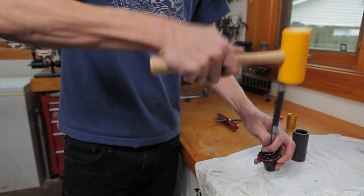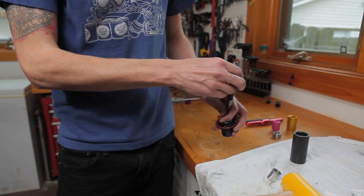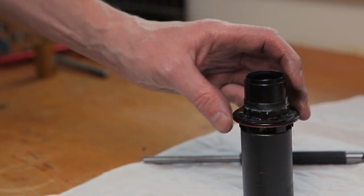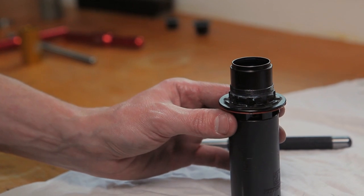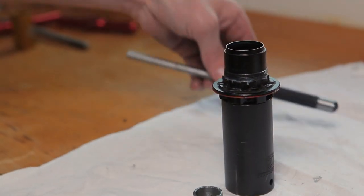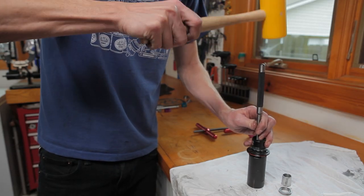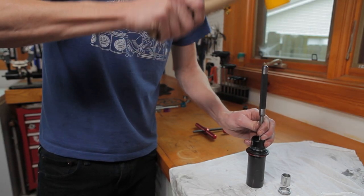Once the outboard bearing is free, the freehub spacer will come right out. Place the freehub body face down on the socket to prepare to remove the inboard bearing. Using the same technique, go around the bearing with the punch to push it out as straight as possible.